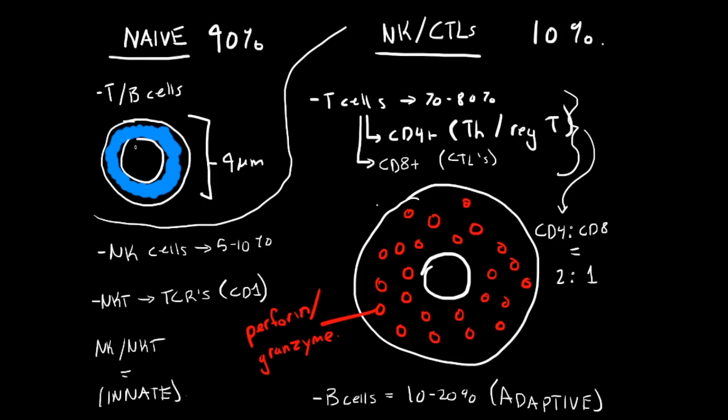They have a round nucleus approximately the size of a red blood cell, and they have a small rim of cytoplasm. They're about nine microns in diameter. They make up about 90 percent of the lymphocytes.